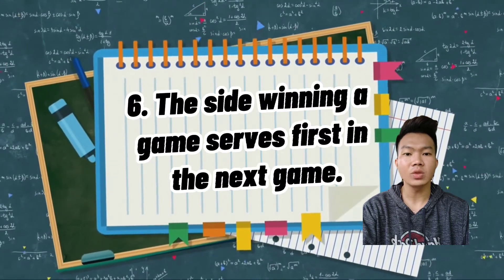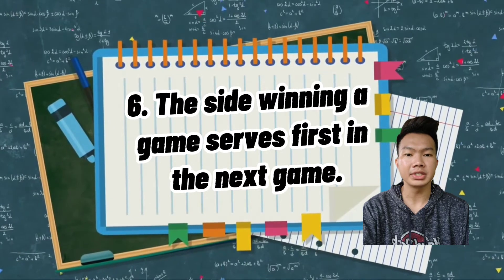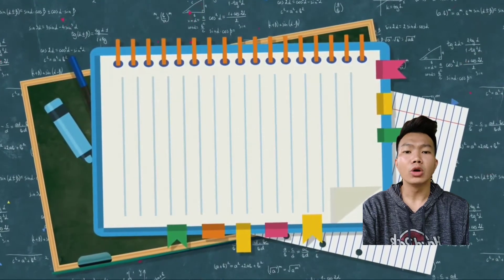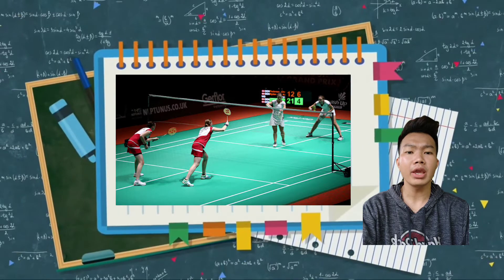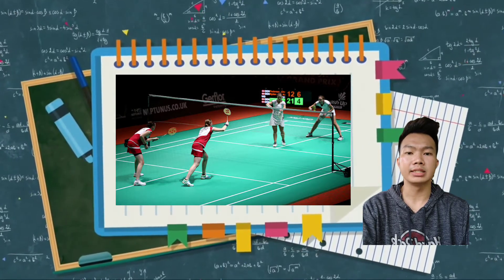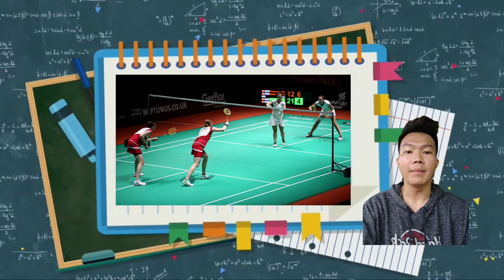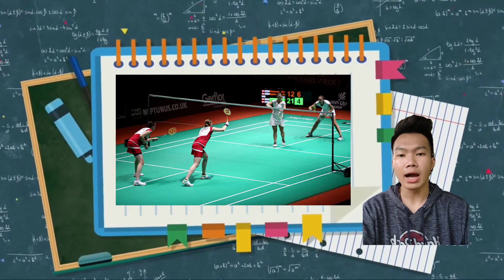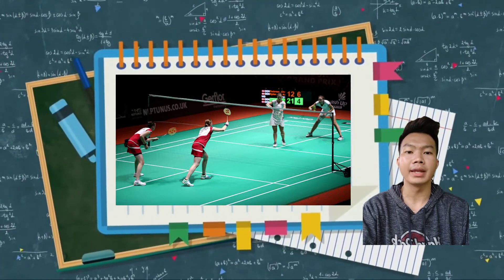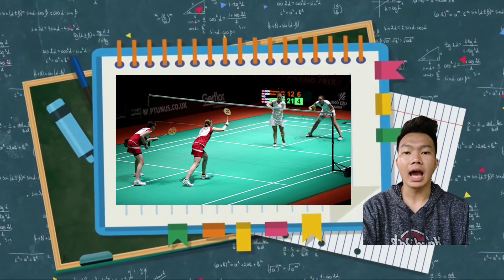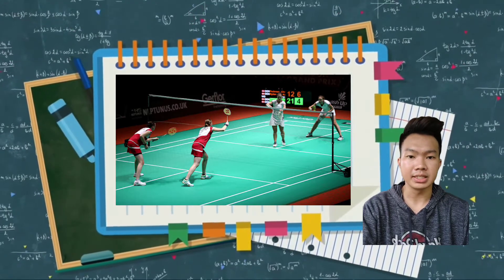Number six, the side winning a game serves first in the next game. Kung sino yung player or pair na panalo sa isang rally, ay siya rin ang magsaserve sa next na service. Halimbawa, si player or pair one ang panalo sa rally, sila pa rin ang magsaserve the following service.